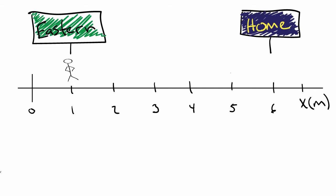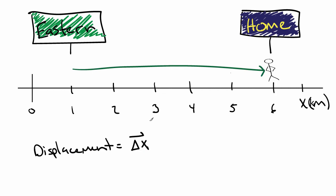First, the displacement is the vector difference between the final and initial positions. Let's say the position of Eastern is 1 km in the positive x direction, and the position of home is 6 km also in the positive x direction. Then if I go from Eastern to home, my displacement is equal to the position of home minus the position of Eastern, or 5 km in the positive x direction.